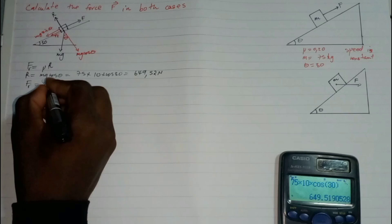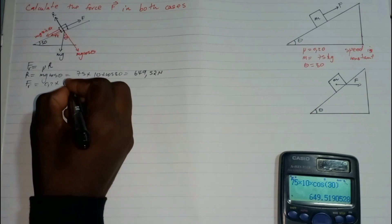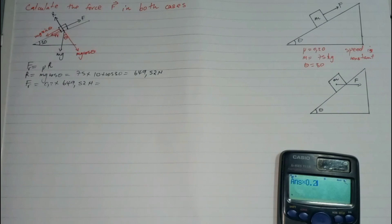So friction equals the coefficient of friction 0.2 times 649.52 newtons, which gives us 129 newtons.